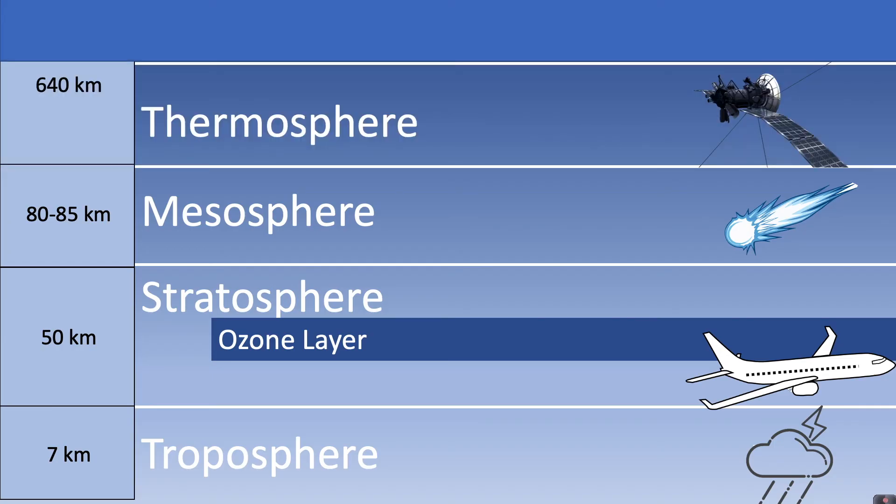And then we have the thermosphere above that, extending to approximately 640 kilometres. And this is where a lot of our satellites are positioned. And on top of that, the very outer layer of the atmosphere is called the exosphere.